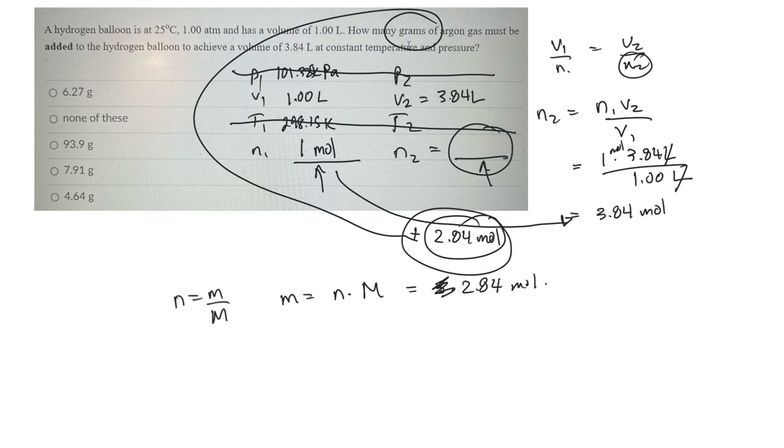So I'll use moles is equal to mass over molar mass. Mass is equal to moles times molar mass. The moles are 3.0. So I added this much. So 2.84 moles times the molar mass of argon. I don't know that. What's the molar mass of argon? Just a sec. 39.95. Okay, so let's do it on the calculator. It's got to be this one. But let's get out the calculator and try it.